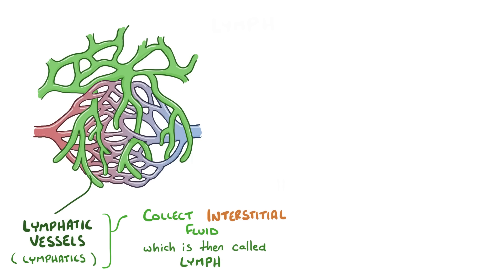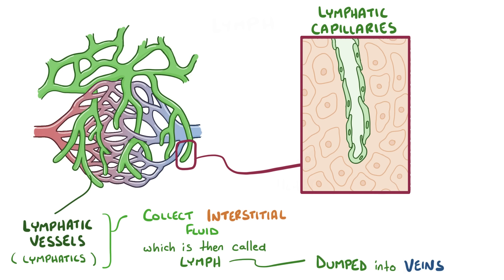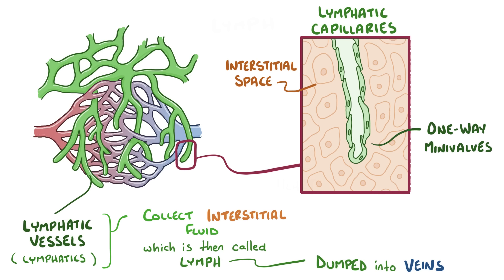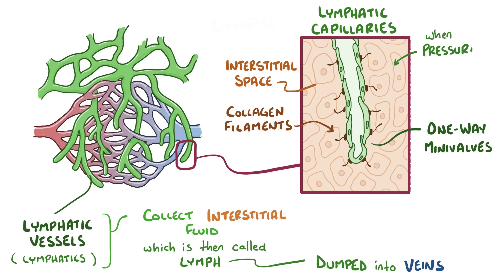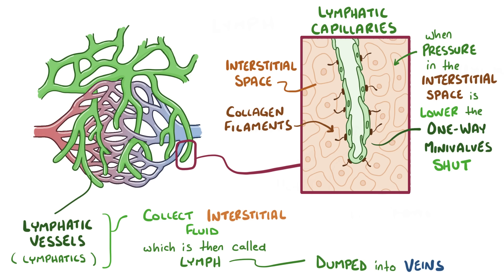Unlike the circulatory system, the lymphatic system isn't a closed loop because fluid and proteins make their way into the microscopic lymphatic capillaries, and all of the collected lymph is dumped into the veins. Lymphatic capillaries are the smallest lymphatic vessels, located throughout the interstitial space. They're extremely permeable because their walls are made of endothelial cells that only loosely overlap, forming one-way mini-valves. These endothelial cells are anchored to structures in the interstitial space by collagen filaments, which allows the capillaries to stay flexible but retain their overall shape. When the pressure in the interstitial space is greater than the pressure in the lymphatic capillary, the endothelial mini-valves open up, allowing fluid to get in. When the pressure is less, the mini-valves are pushed shut, keeping the lymph inside.